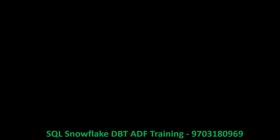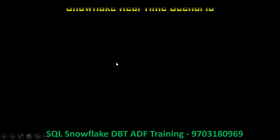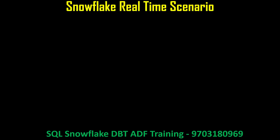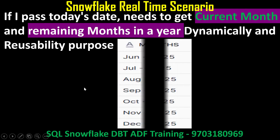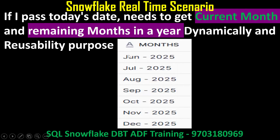Hello, welcome back to my channel Praveen Kumar. Today we'll see one Snowflake real-time scenario or use case. If I pass today's date, you need to get the current month and remaining months in a year dynamically. Right now we're in June month, so when you pass the current date, you get June as the current month as well as the remaining months.